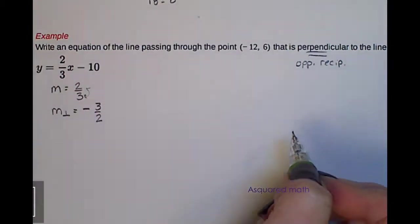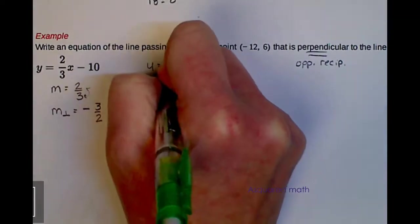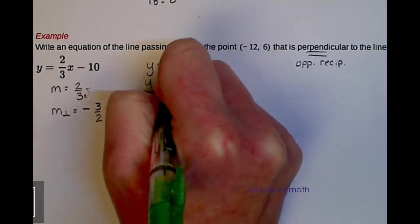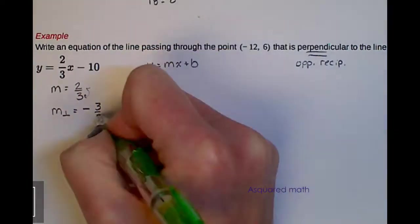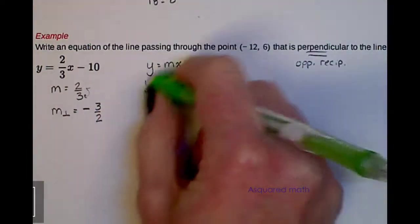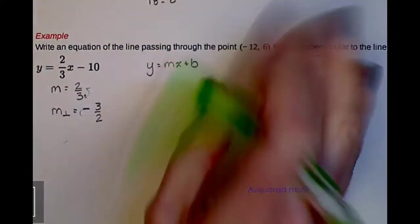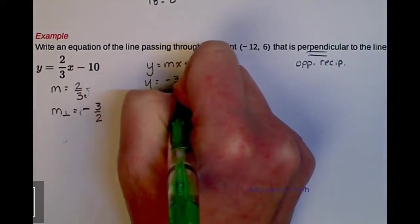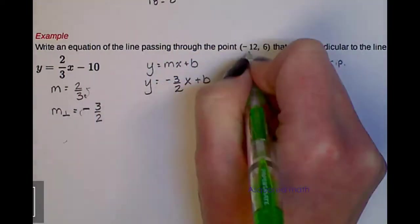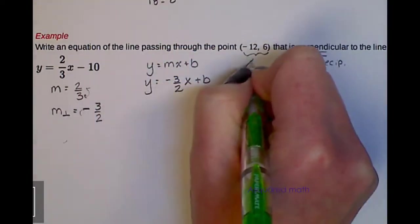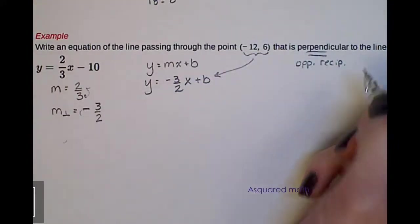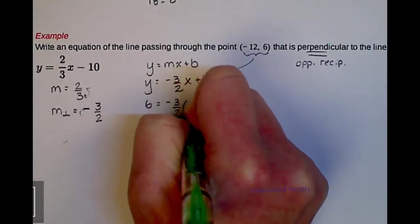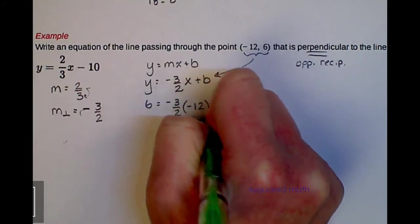So right now, to start, if we again put it into the y equals mx plus b, and we're working with perpendicular, we need to have our perpendicular slope of negative 3 halves x plus b. Again, we want to take these x and y's and plug them into this equation, solve for b. So our y value is 6, negative 3 halves times x value of negative 12, plus b.